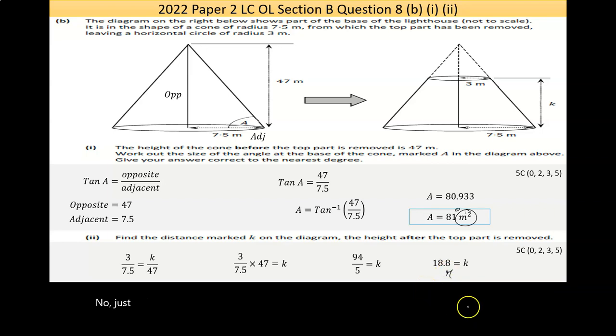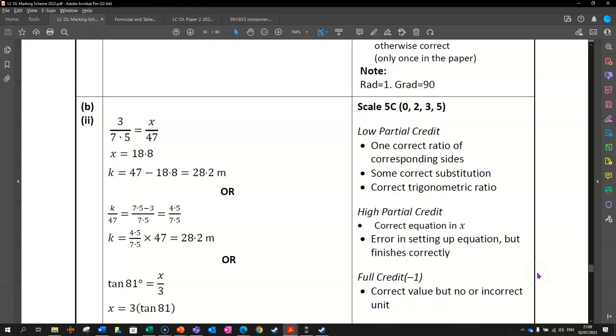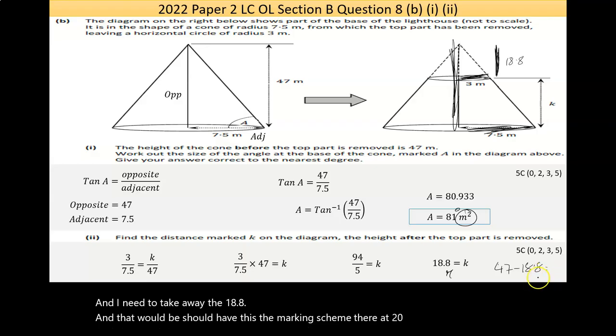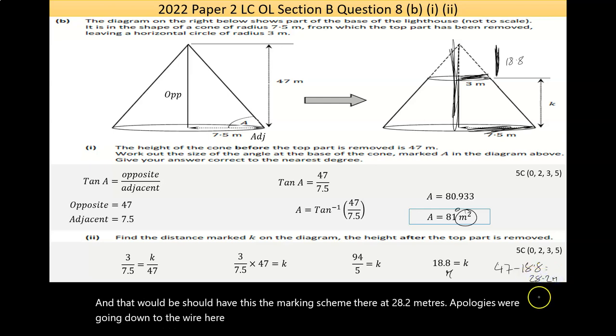Now, I've just realized that my answer was maybe wrong there. This isn't wrong, but I'm relating this and this with the full height, and this height. So, I said that wrong in the last few minutes. So, I found this, 18.8. Now, I want K. So, the full height is 47. And I need to take away the 18.8. And that would be, I should have this in the marking scheme there, 28.2 meters. Apologies for going down to the wire here. So, let's fix that. I made two mistakes there in the marking scheme, so I'll fix them after.